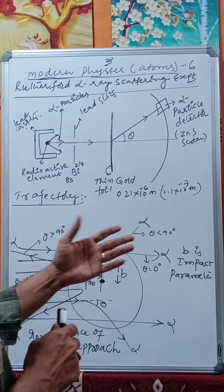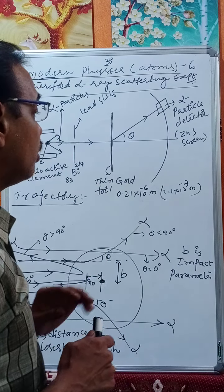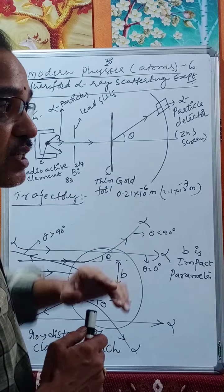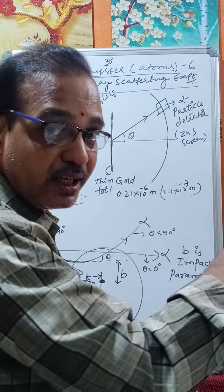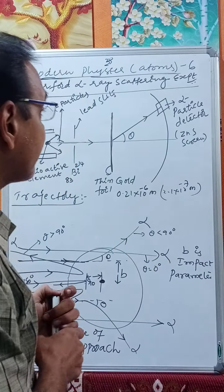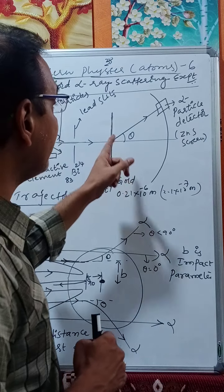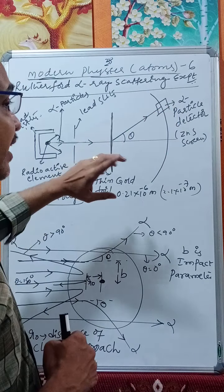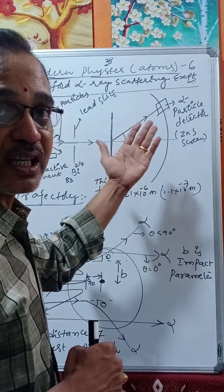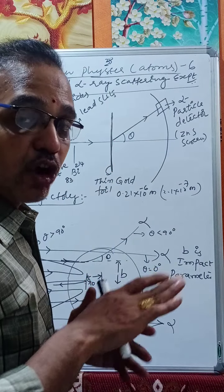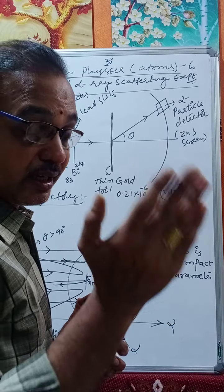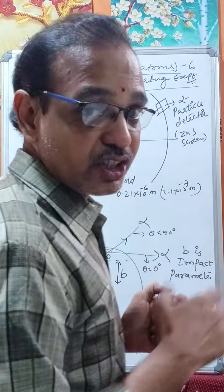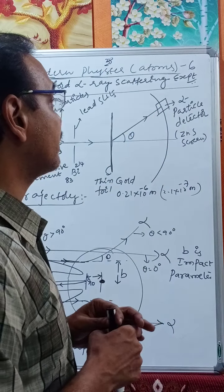After passing through the gold foil, the alpha particles fall on a zinc sulfide screen where scintillations occur. An alpha particle detector is placed at various angles — at 0°, between 0° and 90°, at 90°, between 90° and 180°, and at 180° — to count how many alpha particles are scattered at each angle.